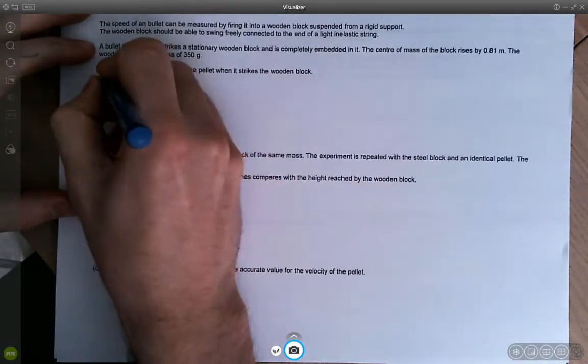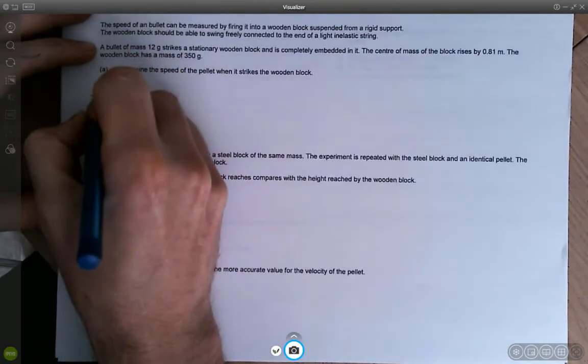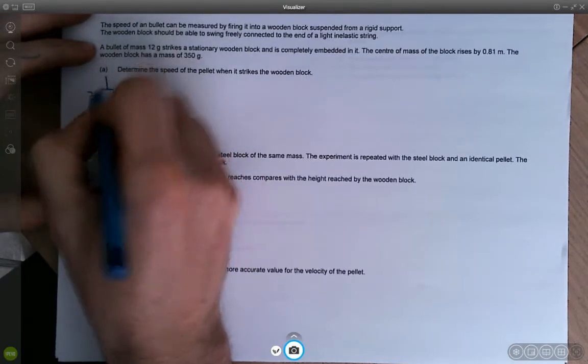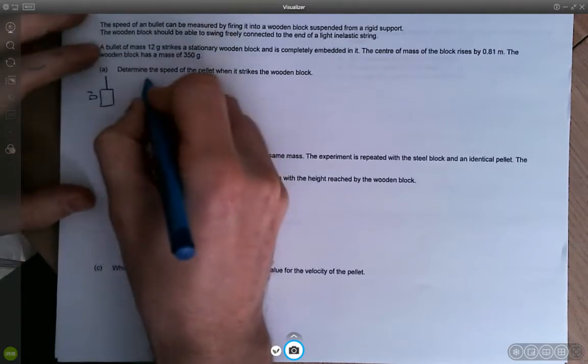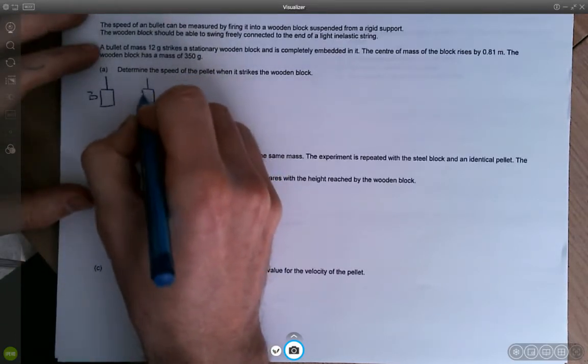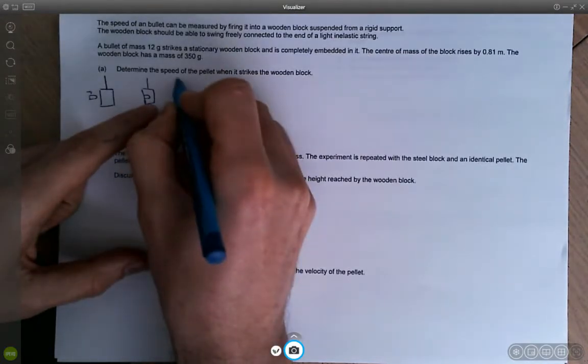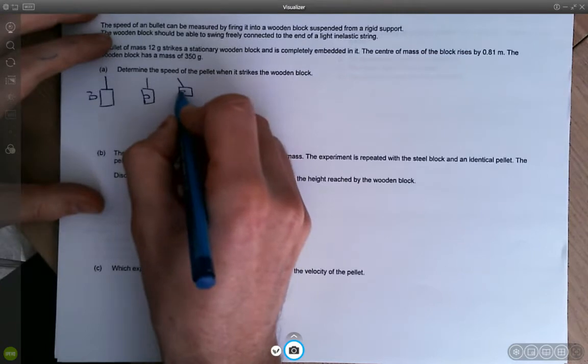So what we should do is just do a very quick sketch of the situation and this will help us understand what's going on. So we've got a bullet heading towards a wooden block. It's going to strike the wooden block, get embedded in the wooden block. That's going to cause the wooden block to move and then the wooden block ends up higher up later on.